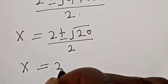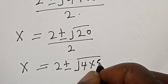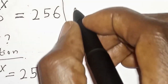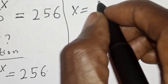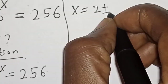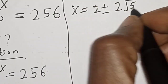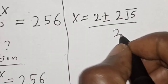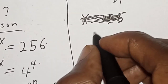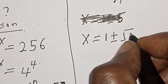We simplify: square root of 20 equals square root of 4 times 5, which is 2 square root of 5. So s equals 2 plus or minus 2 square root of 5, divided by 2. Canceling the 2, s equals 1 plus or minus square root of 5.